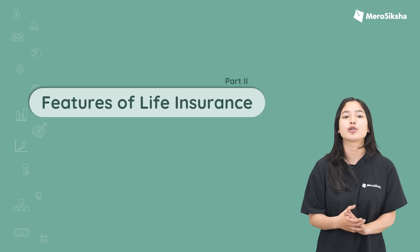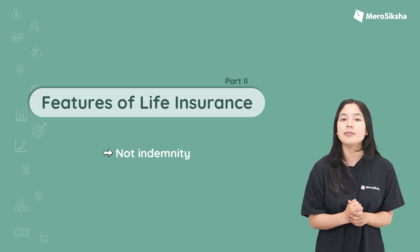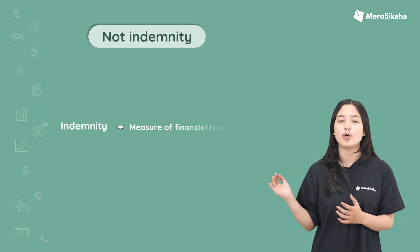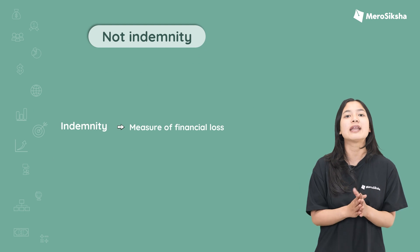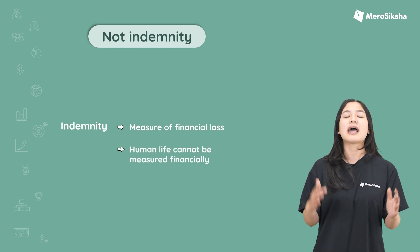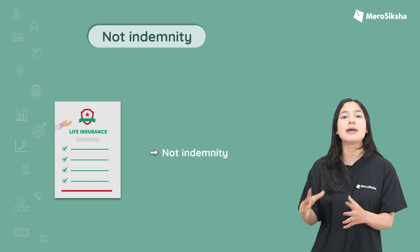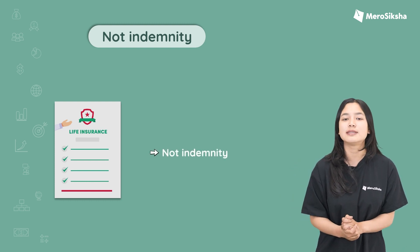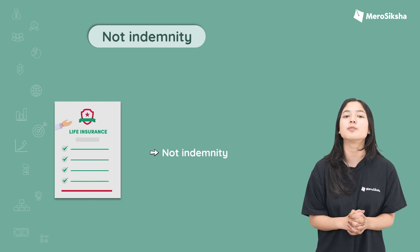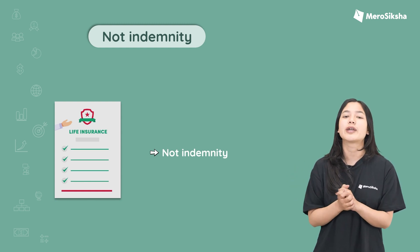We have the final feature of life insurance: not indemnity. Indemnity means financial loss. We cannot measure a human life purely in terms of financial loss. Life insurance does not follow the principle of indemnity — it is not about measuring financial loss; it is about providing support only.